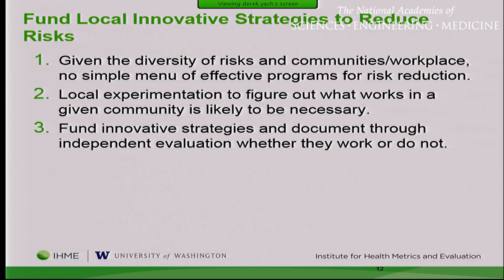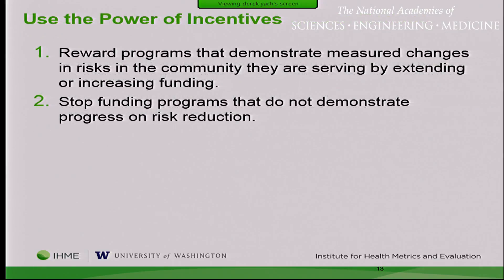We have to accept in the public health system that we cannot figure out a solution applicable to every business, every community, every racial group, every geographic area. So we have to experiment and fund innovations. Public health is local — we have to empower local people to find solutions for themselves and pay for these innovations. We need to stop funding programs that are not working and reward those that are. It's like investing in a 401k — if a stock is not doing well, sell it and invest in the good ones.